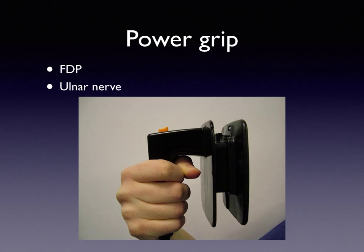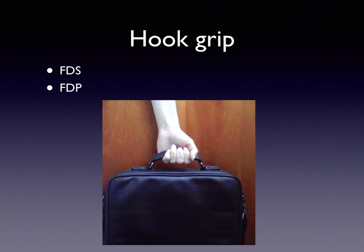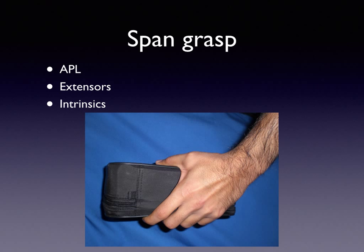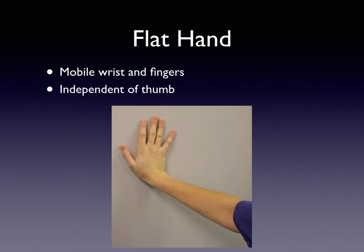Moving on to the hand grips: the thumb contributes about 10% to power grip, which is really a function of FDP and ulnar nerve function. Hook grip — the ability of the fingers to hook around or lift an object — can be undertaken without a thumb and requires FDS and FDP. Span grasp — the ability of your hand to stretch and accommodate around an object — requires ulnar nerve function, a palmar arch, a wide web space, and function of both APL, the extensors and the hand intrinsics. A flat hand — the ability of your hand to go flat on a surface such as pushing open a door — requires a mobile wrist and fingers into extension, and this can be independent of thumb function.